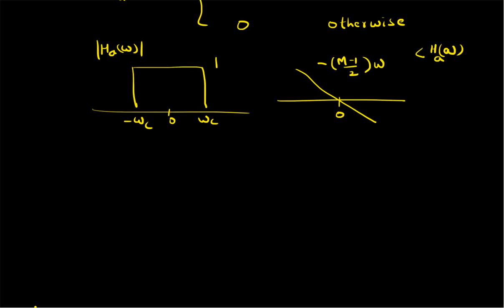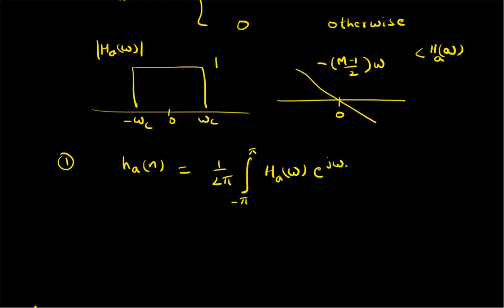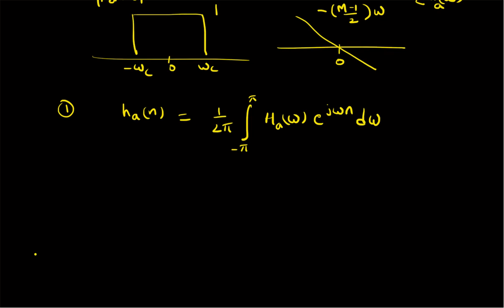For this purpose, we need to first compute the time-domain structure. We have to compute the inverse Fourier transform of h_a(ω), that is h_a(n), which is given by: h_a(n) = (1/2π) ∫_{−π}^{+π} h_a(ω) e^{jωn} dω. This gives us the impulse response of the ideal or desired filter.